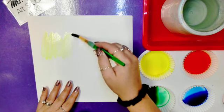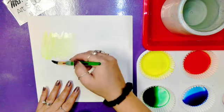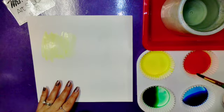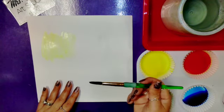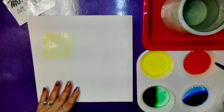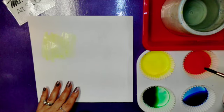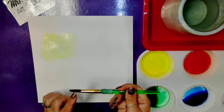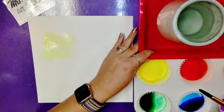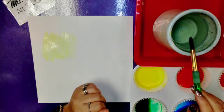But let's say I want to use orange now. What do I need to do with my brush? If I dip it in the orange right now, I'm going to mess my orange up because I've got yellow on my brush. I've got to wash my brush off.